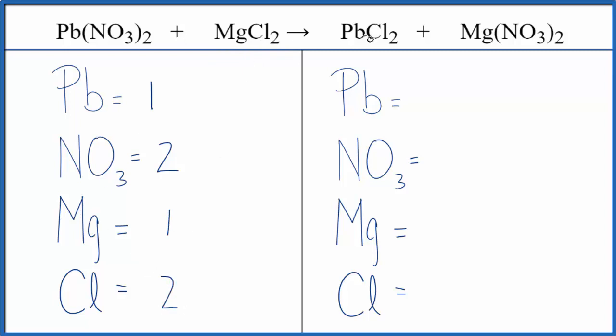And two chlorines. On the product side, one lead, one nitrate times two, so two of those, one magnesium, and then two chlorine.